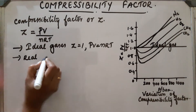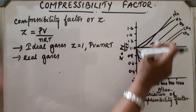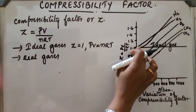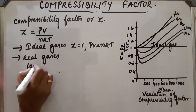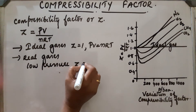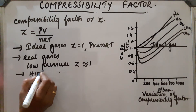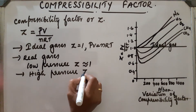In case of real gases, they deviate from ideal behavior. You can see the plots of different gases — all these gases deviate from ideal behavior, and Z deviates from unity for all those gases. At very low pressure, Z is approximately equal to 1. For high pressures, Z is greater than 1.